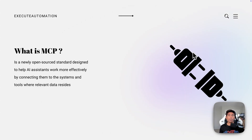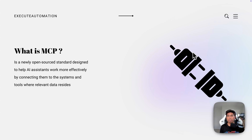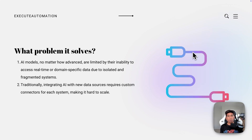Model Context Protocol, or MCP, is a newly open-sourced standard designed to help AI assistants work more effectively and efficiently by connecting them to the systems and tools where relevant data resides. They have just released this as a developer preview, so there are very few connectors available right now, but once more custom connectors are available from different communities, this is going to be exploding tremendously.